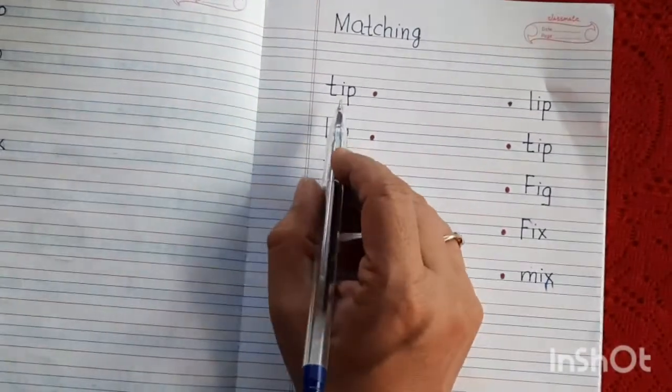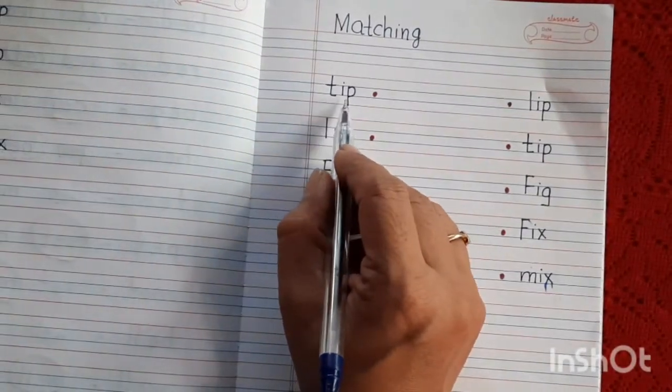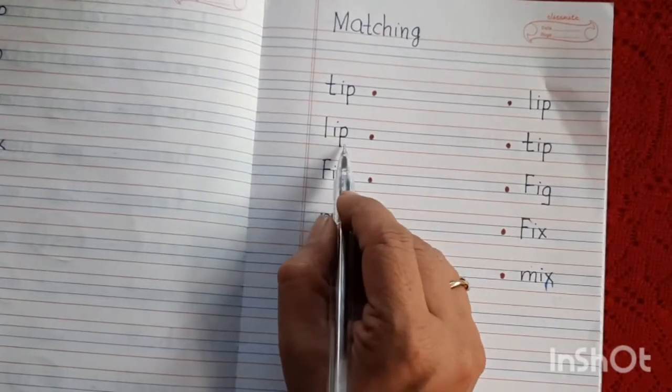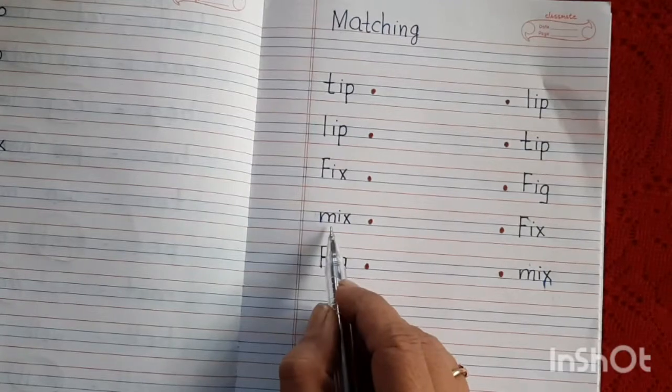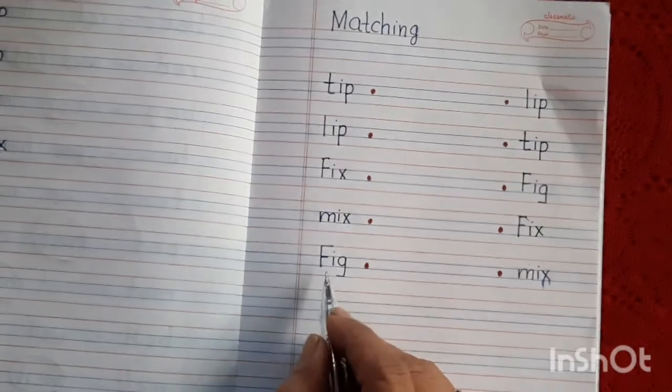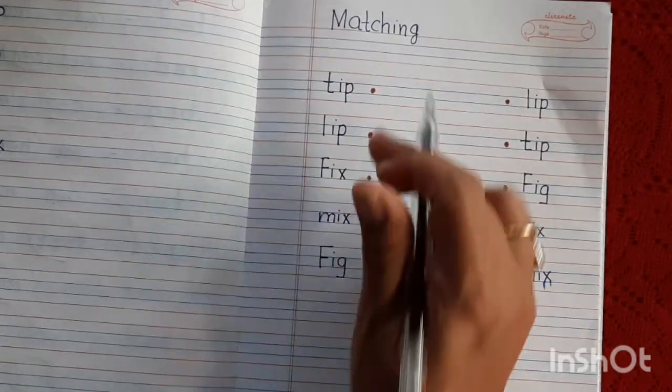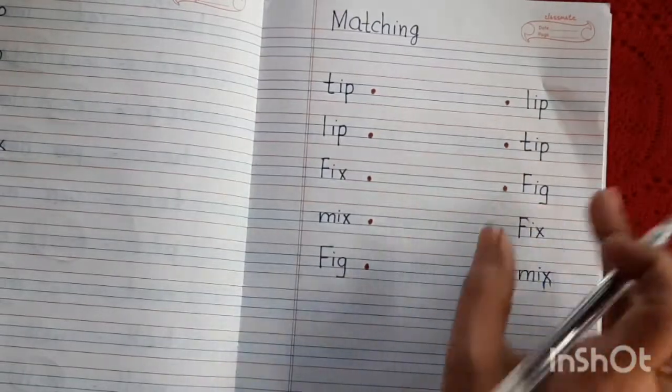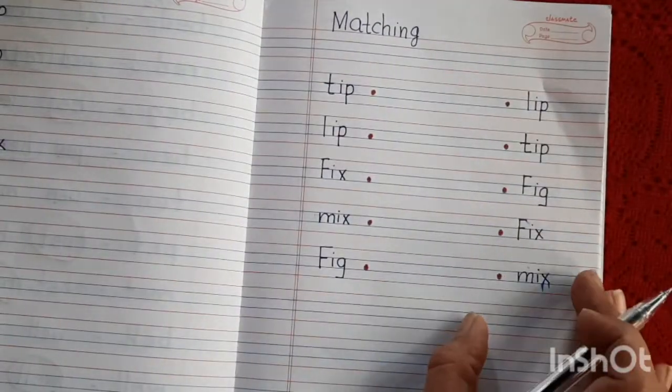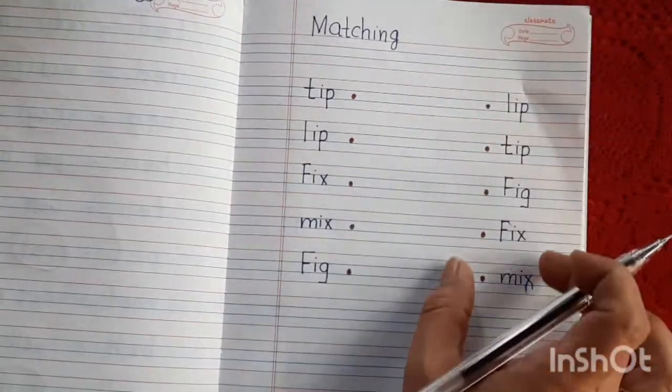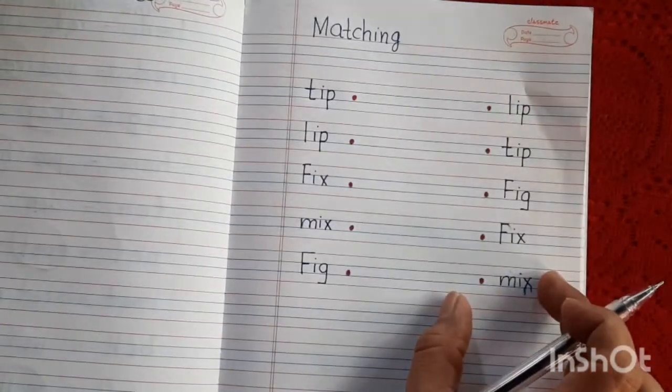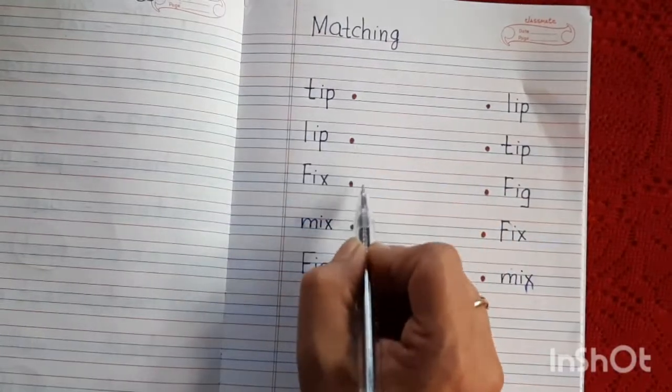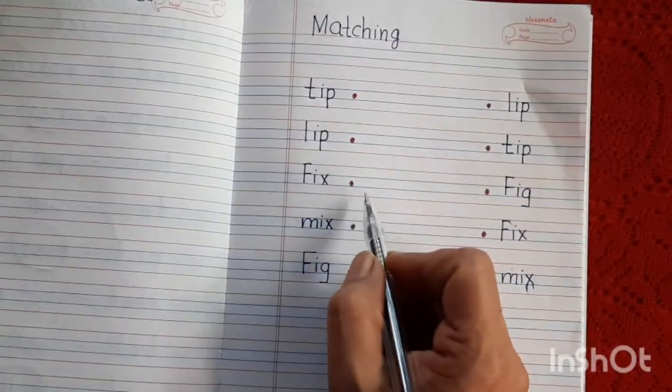જે ફાઇવ વર્ડ્સ અત્યાર આપણે નોટબુક મા લખ્યા, તે સેમ ફાઇવ વર્ડ્સ છે, અને તેને આપણે મેચિંગ કરશું. Let's read first. Tip, lip, fix, mix, fig. આજે ફાઇવ વર્ડ્સ છે, સેમ સામે આ બધ્ધા વર્ડ્સ આપ્યા છે, પણ ઉપર નીચે છે, તમારે આ વર્ડ્સ આ સામે ની બાજુ થી શોધવાના છે, અને આજે ડોટ્સ આપ્યા છે, આ ડોટ ટુ ડોટ જોઇન કરવાના છે.